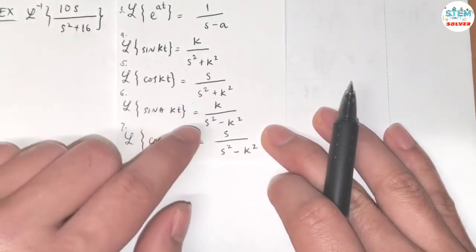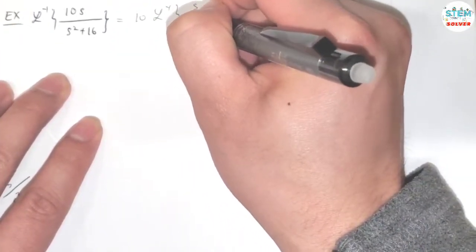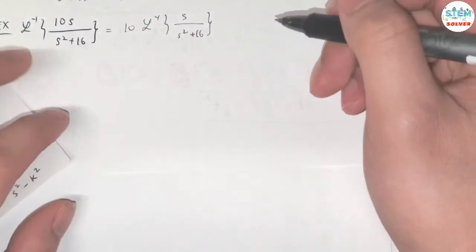First of all, I'm going to pull out a 10. So I have 10 times L inverse of s over s-squared plus 16. Okay?